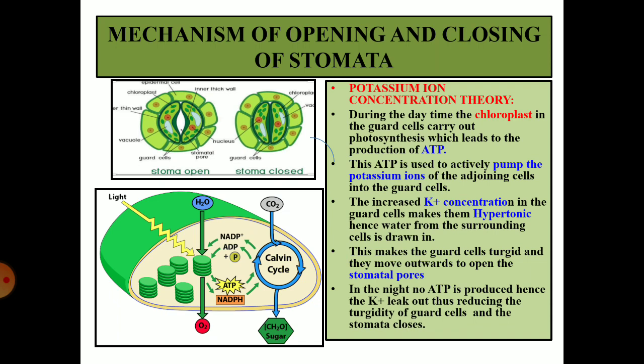In the night, no ATP is produced. Hence, potassium ions which were forced inside leak out, thus reducing the turgidity of the guard cells and the stomata closes — the cells become flaccid and when they become flaccid the stomata closes. This is the potassium ion concentration theory. With this we come to an end of this class. In the next class we will study the mechanism of photosynthesis. Thank you children, take care and God bless.